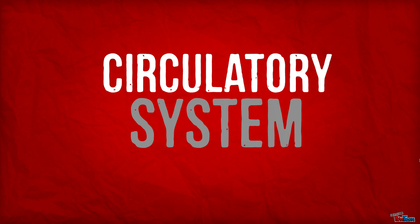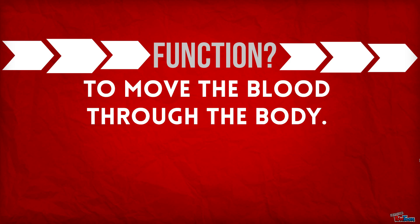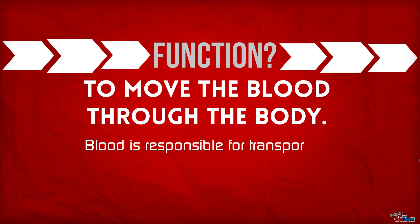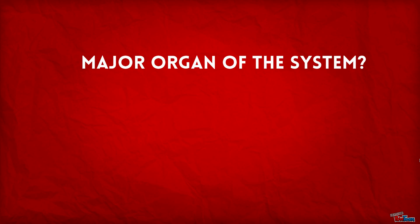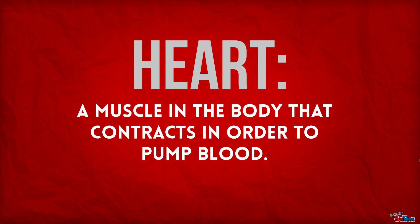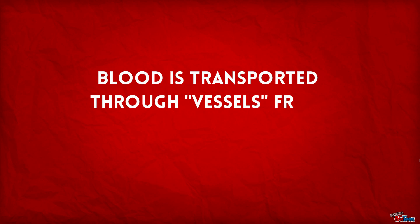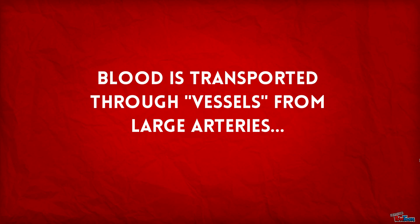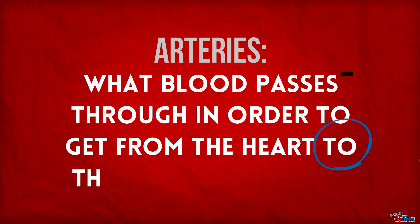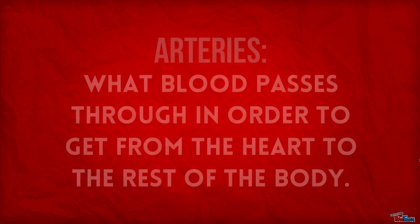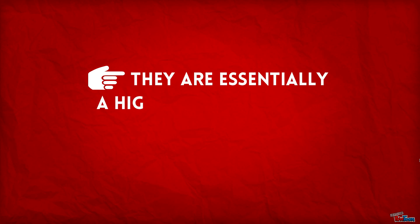The circulatory system. Its function is to move the blood through the body. Blood is responsible for transporting oxygen and nutrients throughout the body. The major organ of the system is the heart. The heart is a muscle in the body that contracts in order to pump blood. Blood is transported through vessels from large arteries. Arteries are what blood passes through in order to get from the heart to the rest of the body — essentially a highway for your blood to travel through.